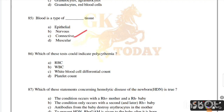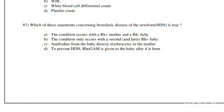Which of these tests could indicate polycythemia? RBC, WBC, white blood cell differential, or platelet count — RBC count. Which of these statements concerning hemolytic disease of the newborn is true? Correct answer: the condition only occurs in the second Rh-positive baby — option B is the right answer.